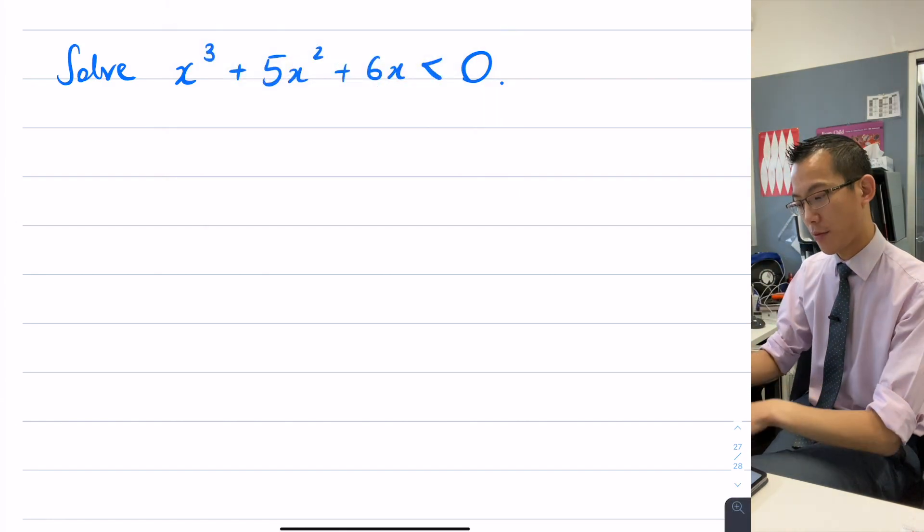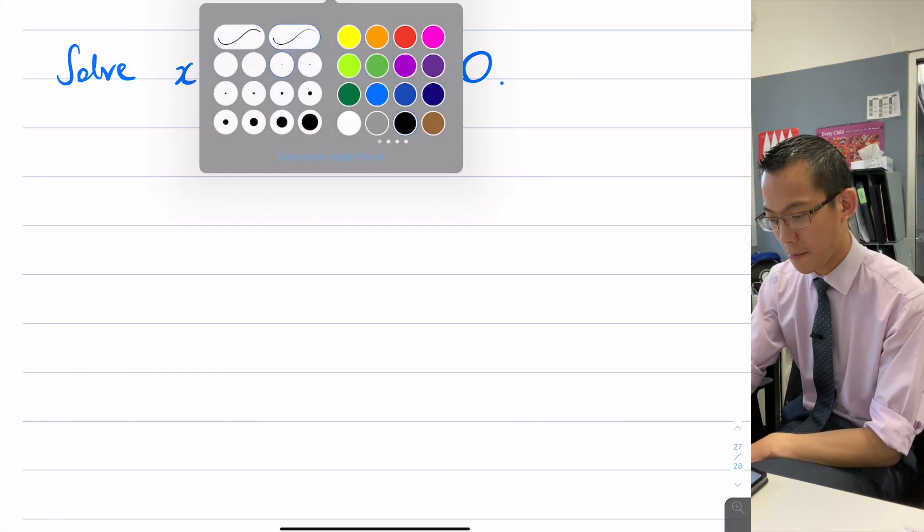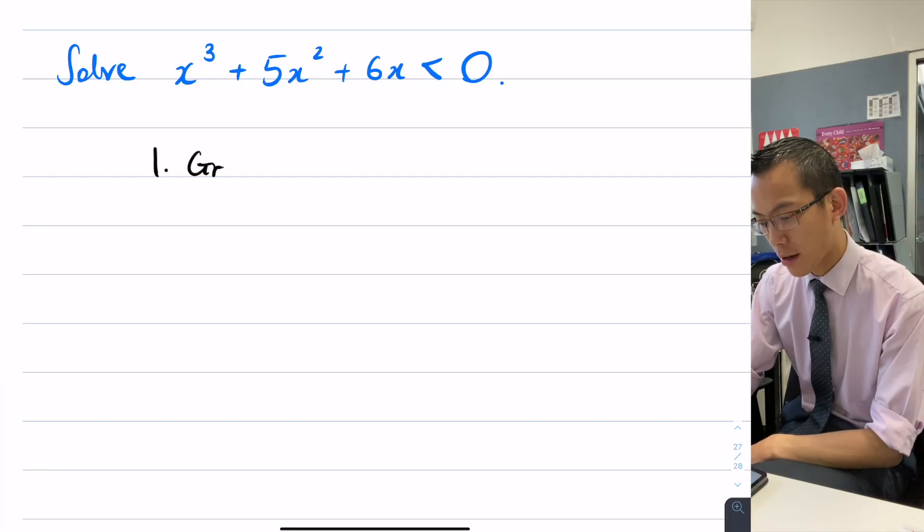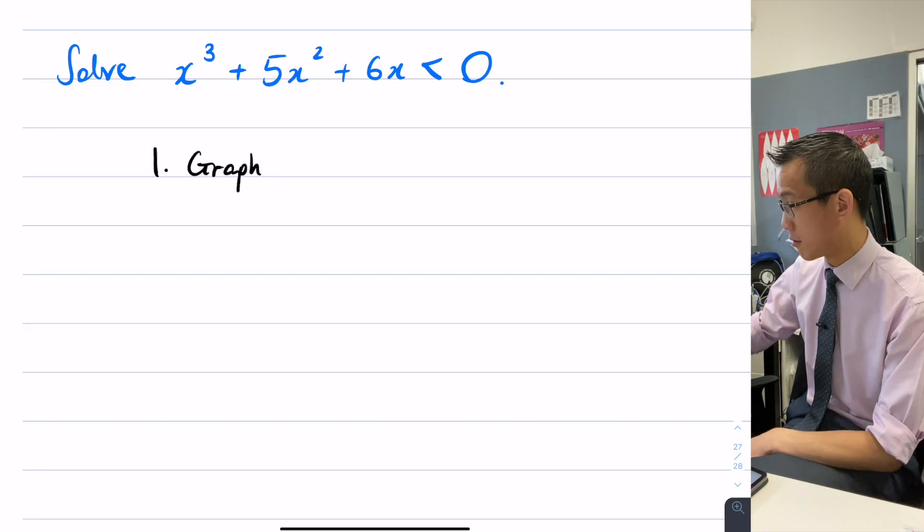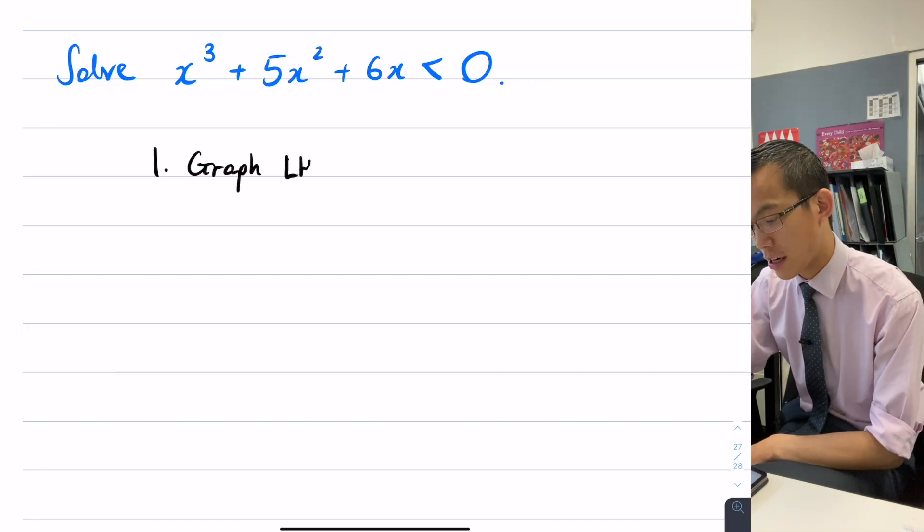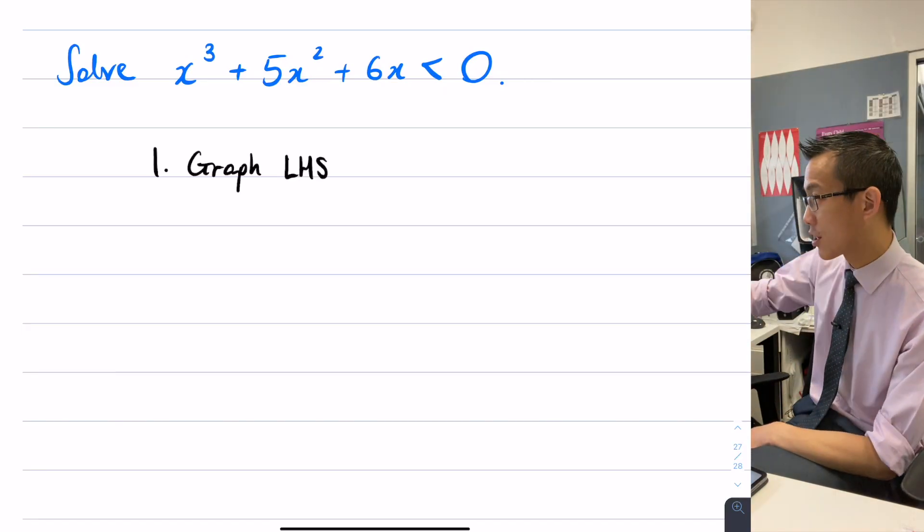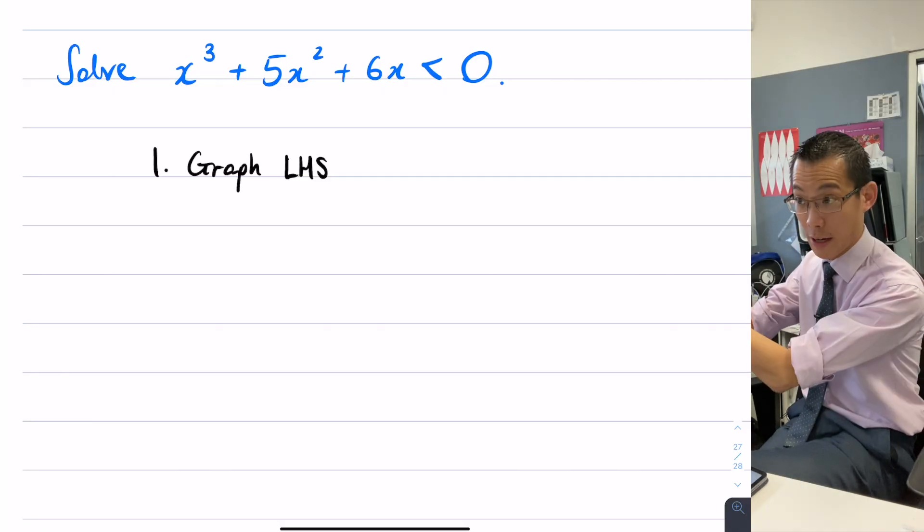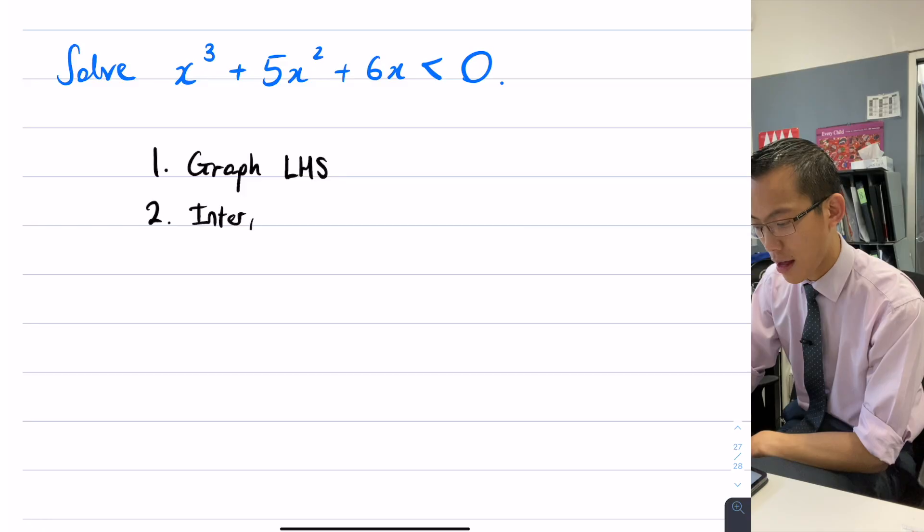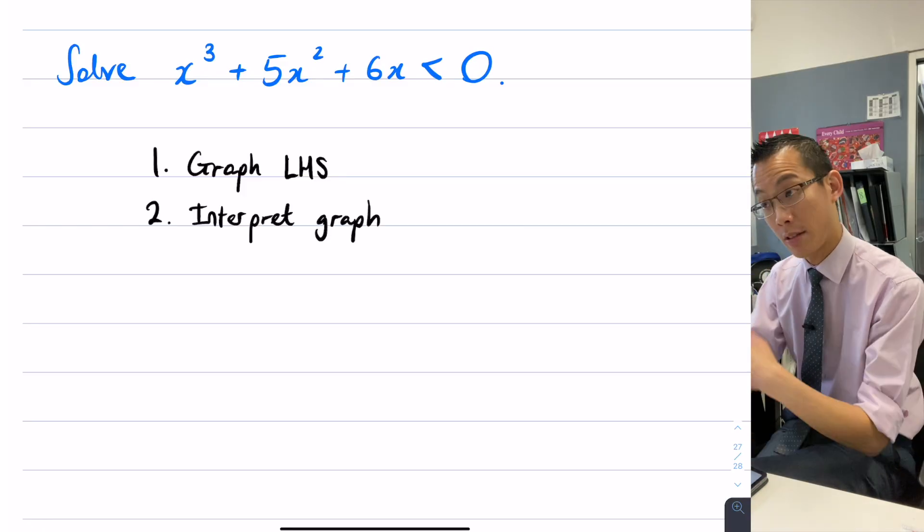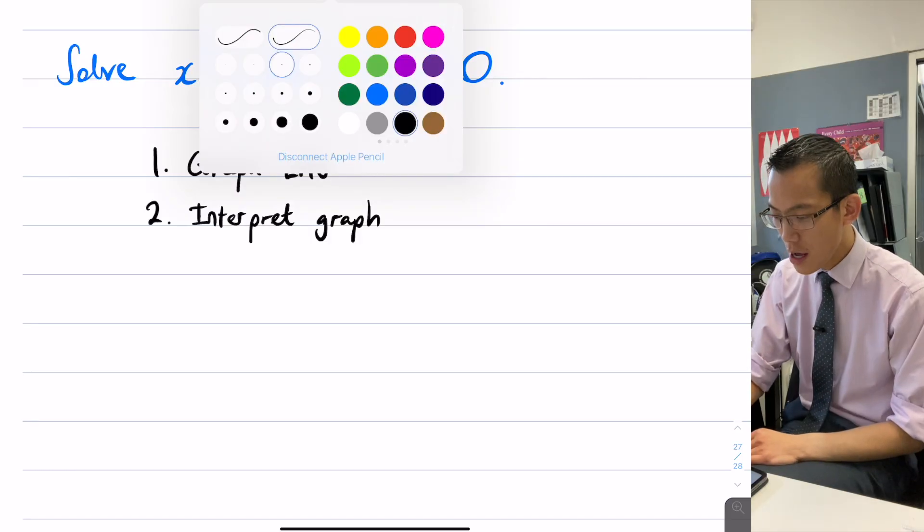So what we're going to do is our mechanism for this is two steps. Number one, we're going to create a graph of the left-hand side of this inequality. That x cubed plus 5x squared plus 6x, we're going to get a picture of that. And then the second thing is, we'll interpret that graph on the basis of this inequality. They are two quite separate steps. So let's have a go at step one.